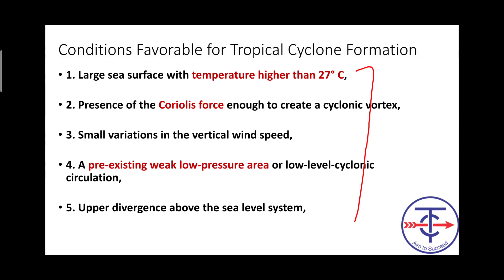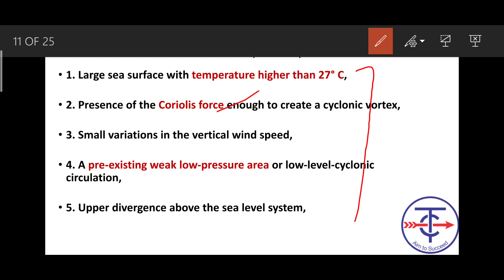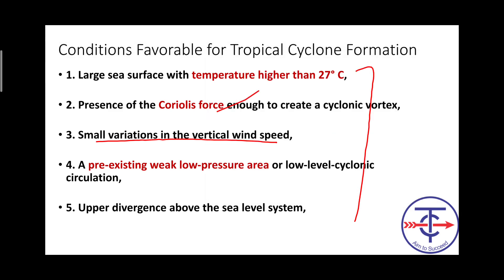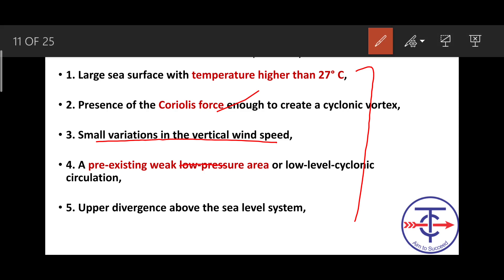Five conditions for tropical cyclone formation: Number one — sea surface temperature must be above 27 degrees. Temperature must be high. Number two — Coriolis force must be present, because without Coriolis force the circular rotation cannot happen, hence no cyclone at the equator. Number three — small variation in vertical wind speed. Number four — pre-existing low pressure area is necessary. Number five — upper air divergence must be present. These five points must always be clear in your mind.